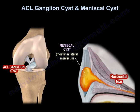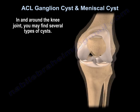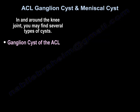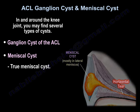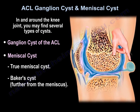In and around the knee joint, you may find several types of cysts. One of them is the ganglion cyst of the ACL. Another type is called meniscal cysts, which are of two types: a true meniscal cyst, and another type called Baker's cyst, which is located a little bit further from the meniscus.